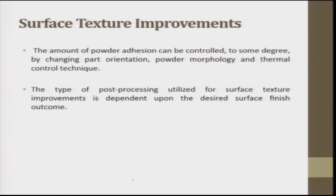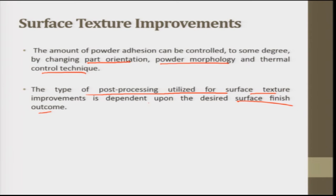The amount of powder adhesion can be controlled to some degree by changing part orientation, powder morphology, and thermal control technique. The type of post-processing used for surface texture improvement depends on the desired surface finish outcome. For a matte surface finish, simple bead blasting can even the surface texture, remove sharp corners from stair stepping, and give an overall matte appearance. If a polished or glossy appearance is required, wet and dry sanding and hand polishing must be performed.